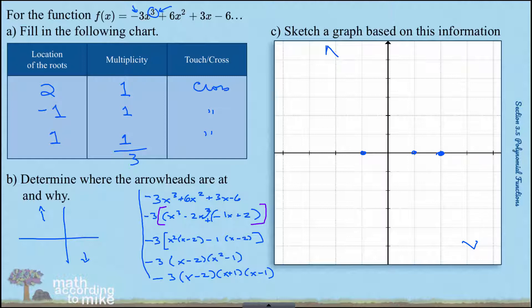Starting at the left arrowhead, when I approach negative 1, I need to cross. And then when I approach positive 1, I need to cross. And when I approach 2, I need to cross again. And notice that puts me back at the other arrowhead.